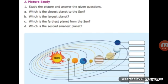Next, which is the closest planet to the sun? Mercury is the closest planet to the sun. Which is the largest planet? Jupiter is the largest planet. Which is the farthest planet from the sun? Neptune is the farthest planet. Which is the second smallest planet? Mars is the second smallest planet.